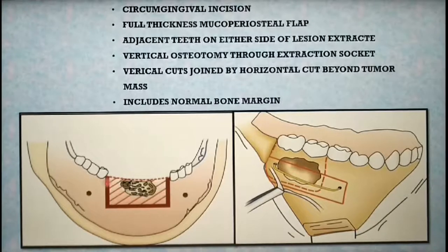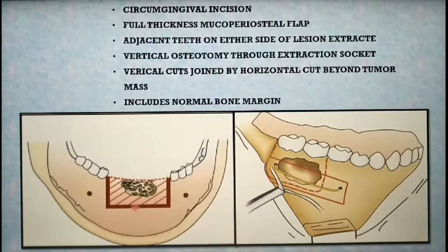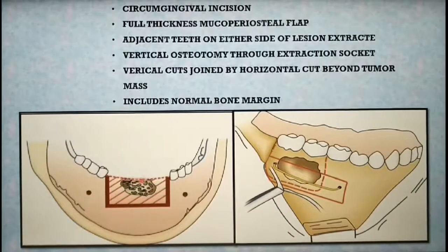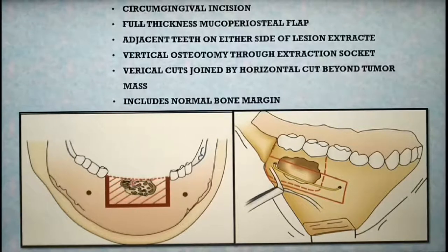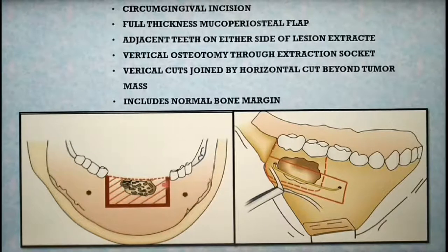After the incision is made, a full-thickness mucoperiosteal flap is reflected using a periosteal elevator. Take care not to perforate the lesion — if the lesion is perforated, the overlying mucosa should also be sacrificed along with the tumor excision. The teeth just adjacent to the tumor mass are extracted on either side, and vertical osteotomies are performed through the sockets of these extracted teeth. As seen in the diagram, vertical osteotomies are performed through the extraction sites using a bur or saw blade.